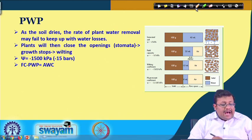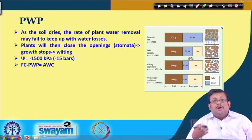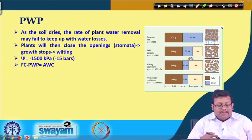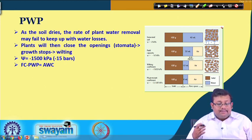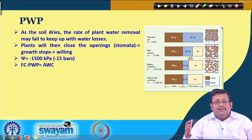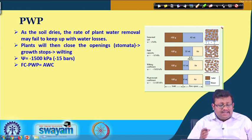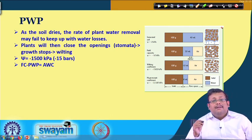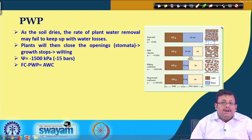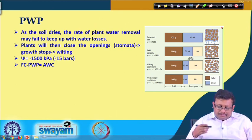Permanent wilting point (PWP): as the soil dries, the rate of plant water removal may fail to keep up with water losses. Plants remove water through transpiration via stomata. When the soil dries further, plants close their stomata because soil water is no longer available — growth stops and the plant starts wilting. At a soil water potential of −1500 kPa the soil wetness reaches the permanent wilting point, below which the plant cannot regain its original growth and remains permanently wilted.